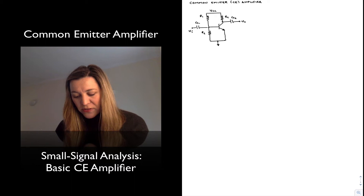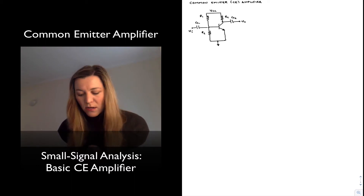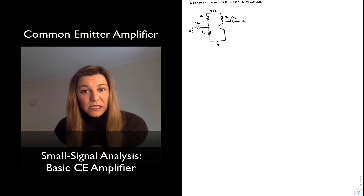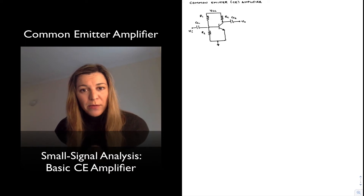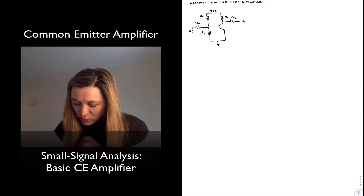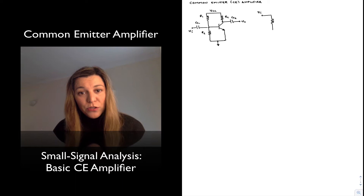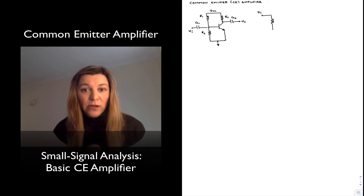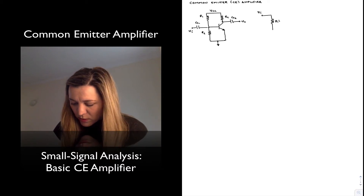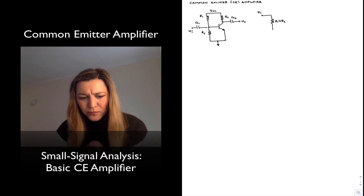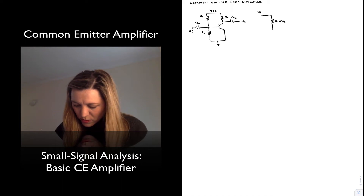I've drawn the basic common emitter amplifier. Everything looks the same as the one we just analyzed except there is no emitter resistor. The first step is going to be redrawing the AC equivalent circuit using the hybrid pi model. The capacitors will be shorts for the AC equivalent circuit. We will have Vin going through a short, and then R1 and R2 both going to AC ground. I'm going to combine them already into the equivalent parallel resistance, R1 in parallel with R2, which goes into the base of the transistor.